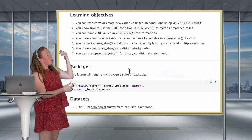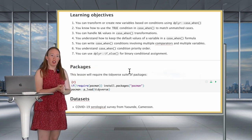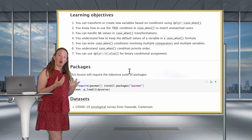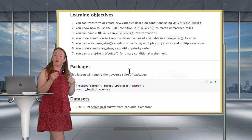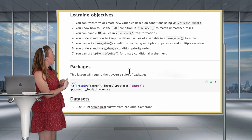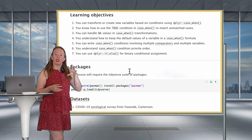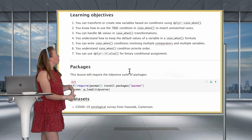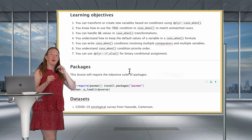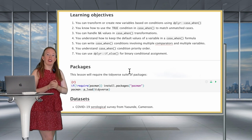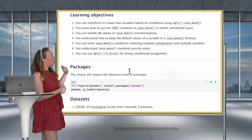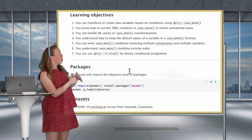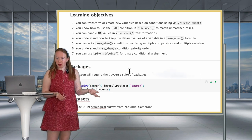You'll also be able to handle NA values within case_when, understand how to keep the default value of a variable if you're only changing just a few values, write case_when conditions using multiple comparators and multiple variables, and understand the case_when condition priority order. Finally we'll see if_else, which is very similar to case_when but used for binary conditions.